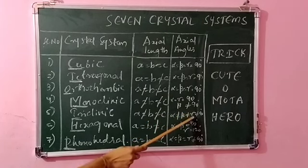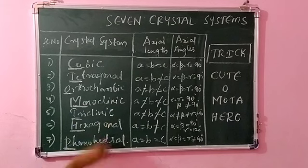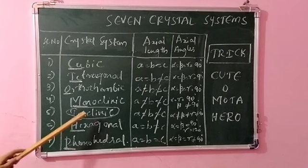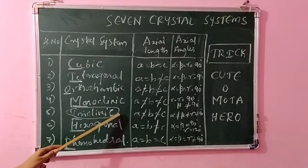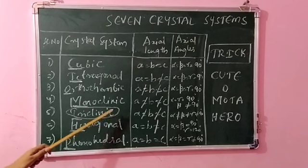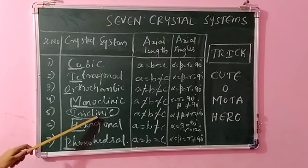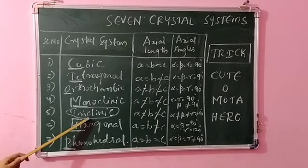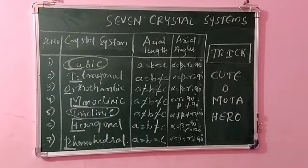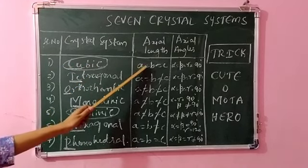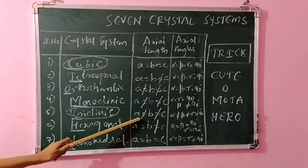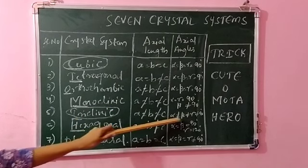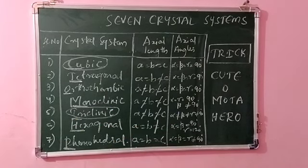Triclinic is the most unsymmetrical crystal system, while cubic is the most symmetrical — both are frequently asked in objective questions. So directly: the first three systems have all angles equal to 90°, the last one (rhombohedral) has all angles equal to each other but not 90°, and triclinic has all angles unequal and not 90°.